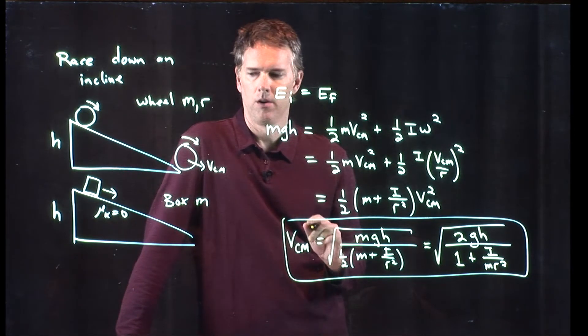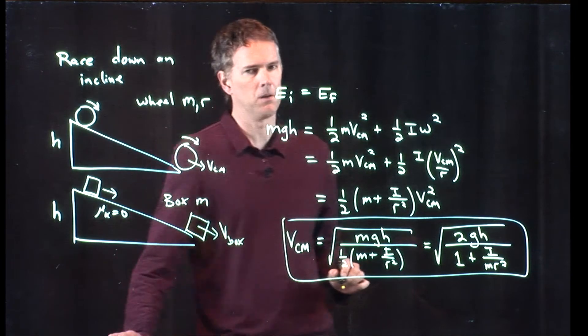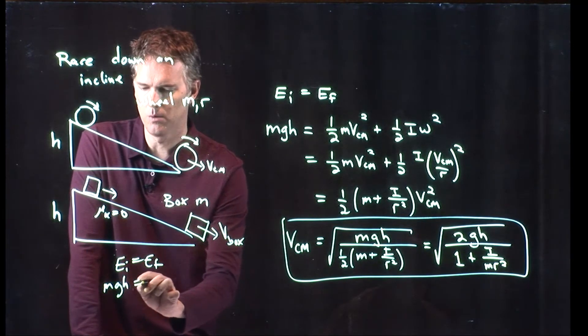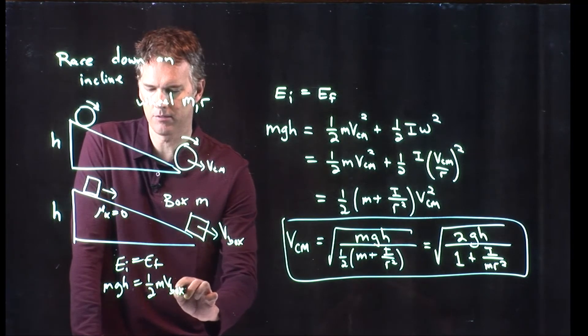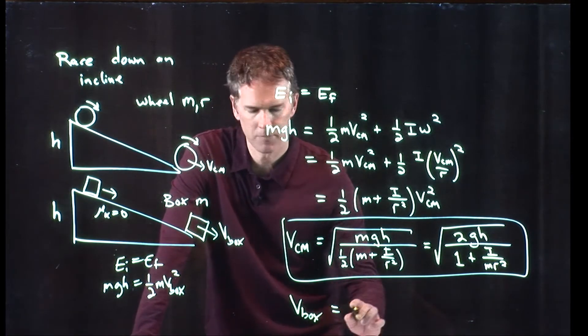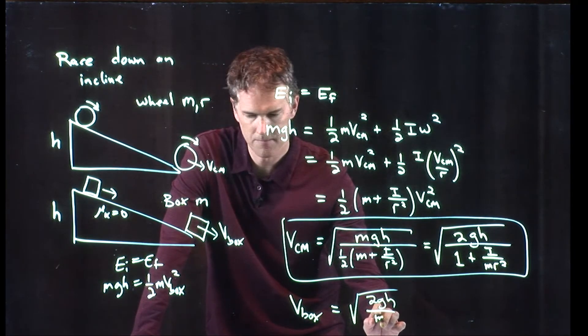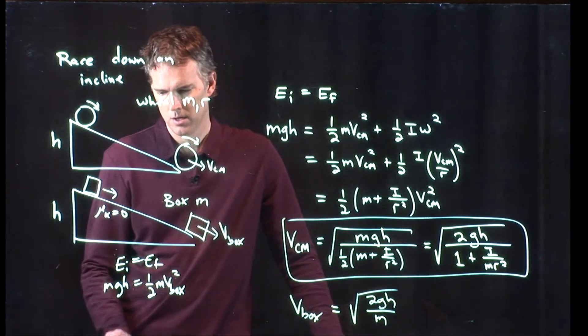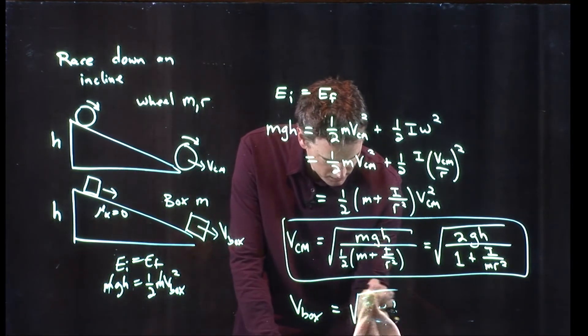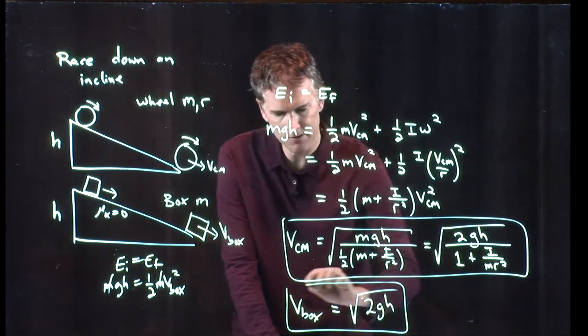What about for the box? The box at the bottom, the velocity of the box, that's not too bad. We can solve this very quickly for the velocity of the box. Square root of 2gh divided by m. I multiply it across by 2, if we divide out the m's, we don't have the m in the bottom. We just get square root of 2gh. And that's the velocity of the box.